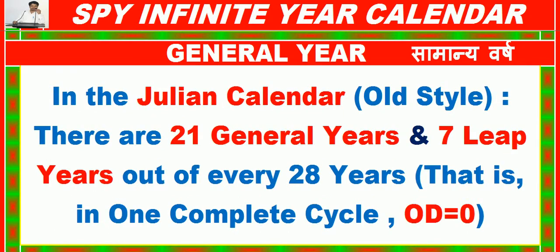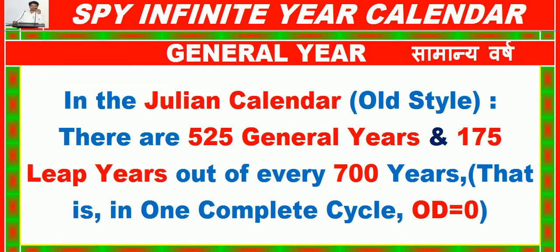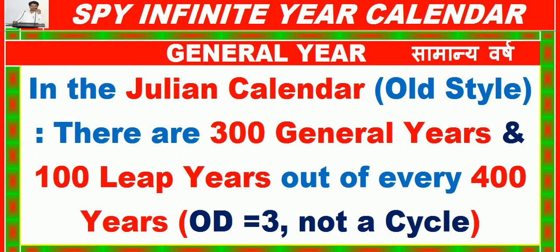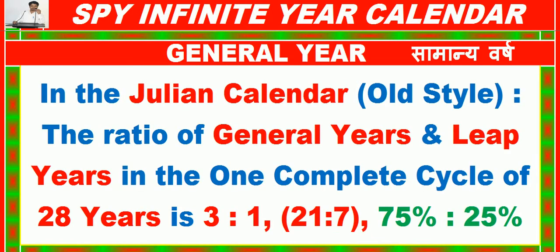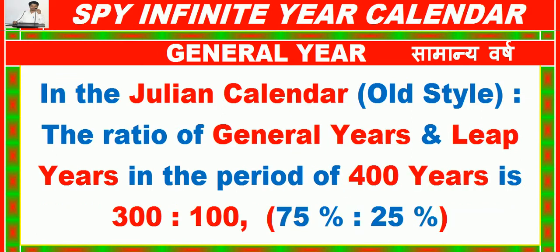In the Julian Calendar (Old Style), there are 21 general years and 7 leap years out of every 28 years (1 complete cycle, OD = 0). There are 525 general years and 175 leap years out of every 700 years (1 complete cycle, OD = 0). The ratio of general years to leap years in the complete cycle of 28 years is 3:1 (21:7), or 75% to 25%.